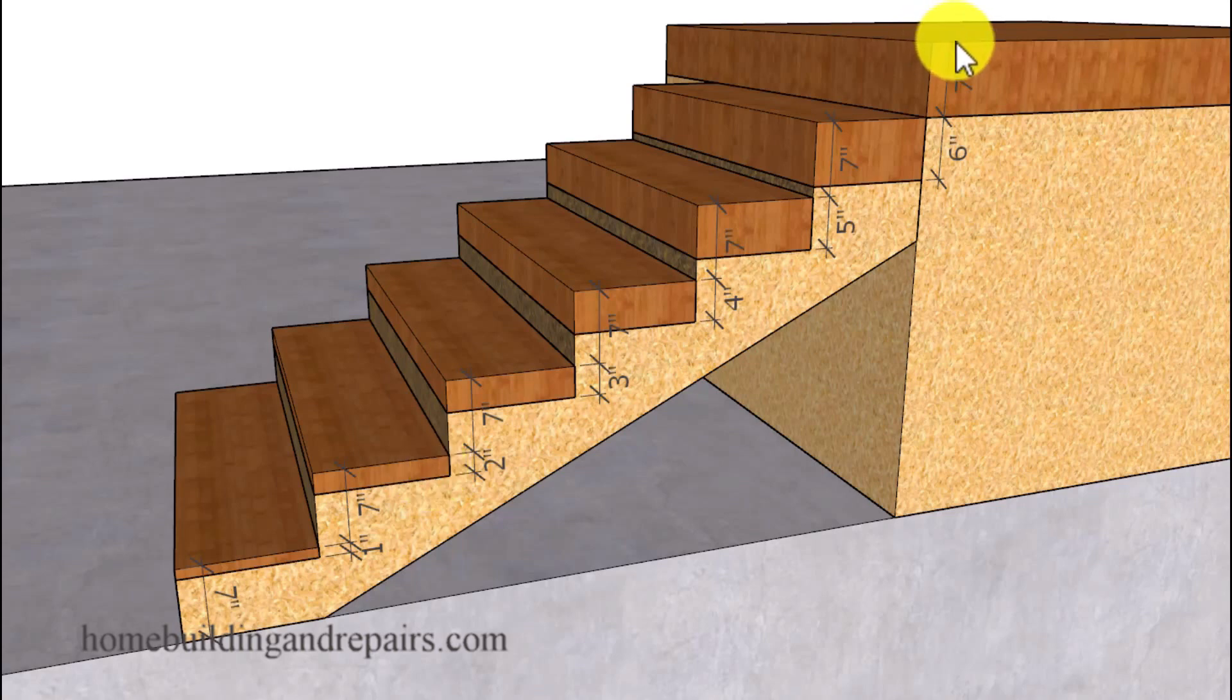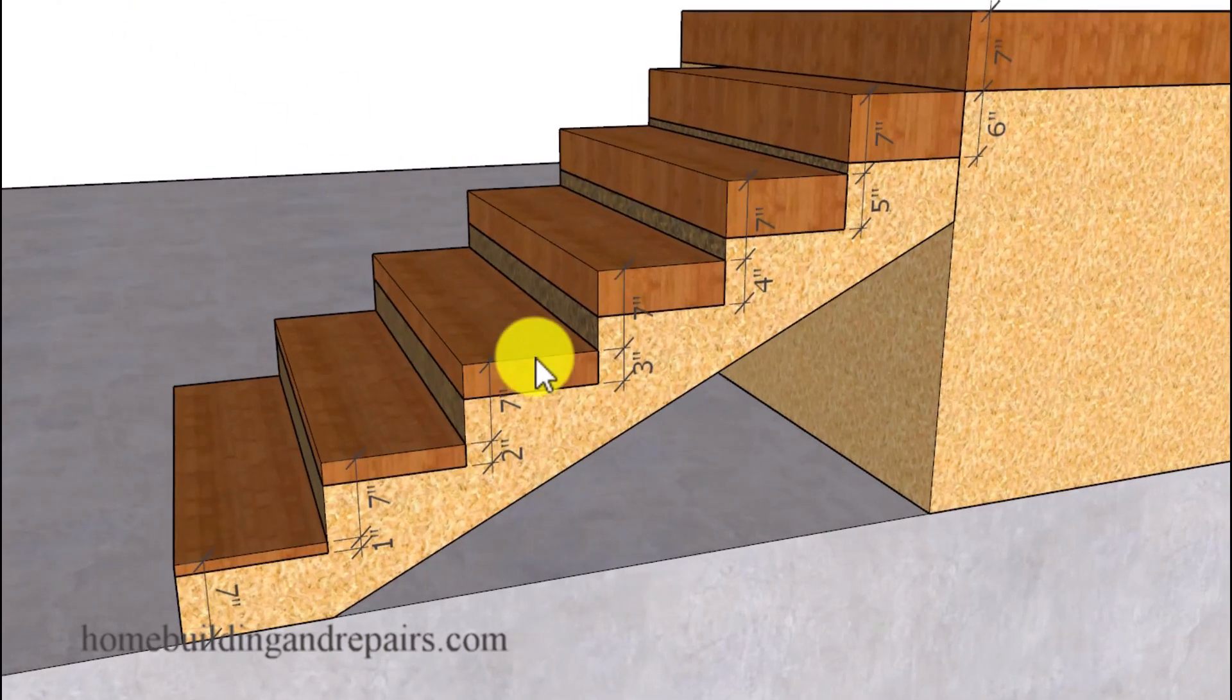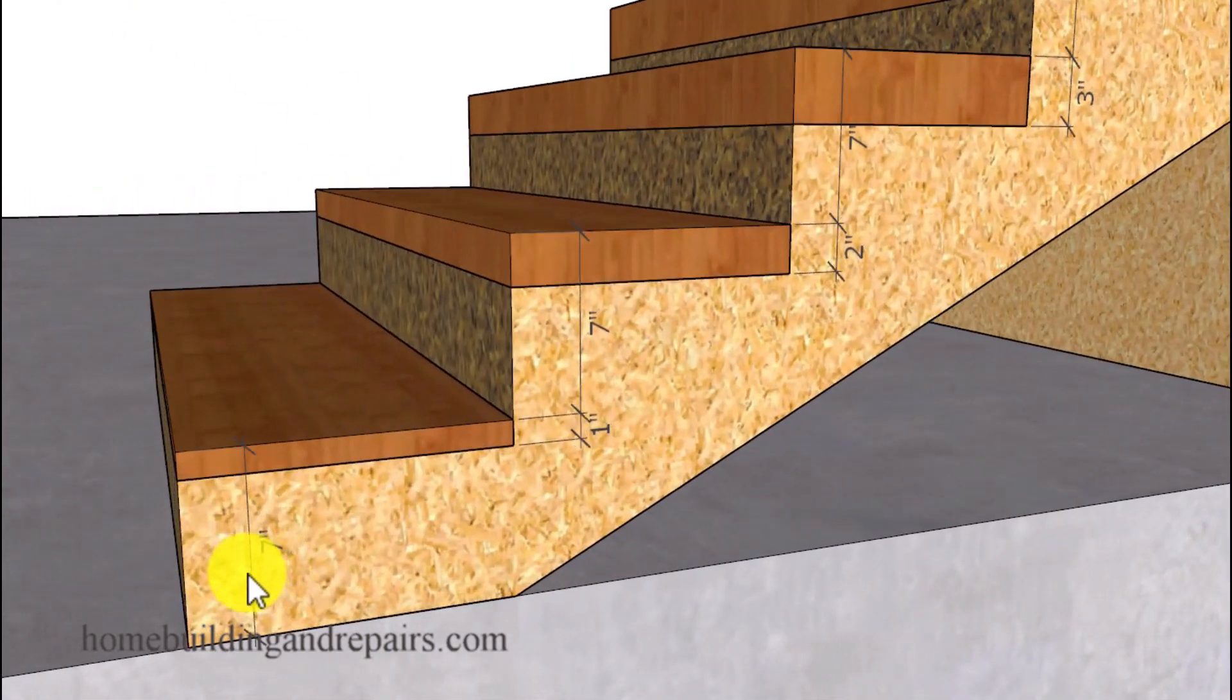Then divide the overall height that you've added to a new floor. For example, we have seven risers, we've added seven inches. If I divide seven into seven, I'm going to get one inch, and that's the amount we're going to add to each step.